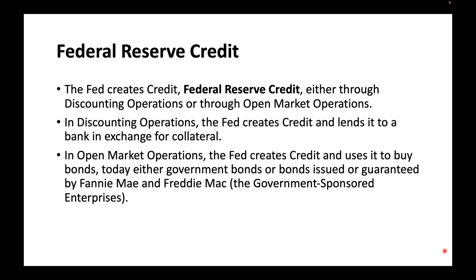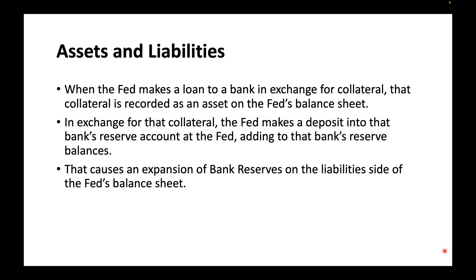The Fed creates credit — Federal Reserve credit — either through discounting operations or through open market operations. In discounting operations, the Fed creates credit and lends it to a bank in exchange for collateral. In open market operations, the Fed creates credit and uses it to buy bonds — today, either government bonds or bonds issued or guaranteed by Fannie Mae and Freddie Mac. When the Fed makes a loan to a bank in exchange for collateral, that collateral is recorded as an asset on the Fed's balance sheet. In exchange for that collateral, the Fed makes a deposit into that bank's reserve account at the Fed, adding to that bank's reserve balances.